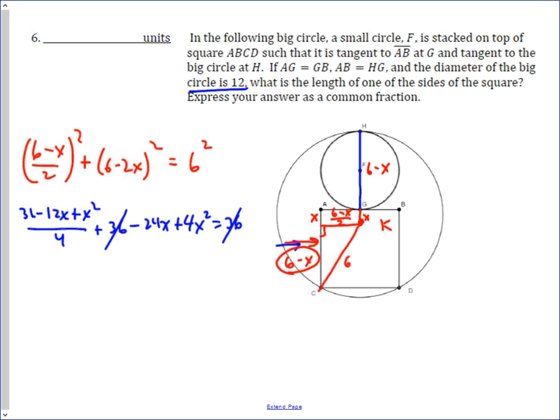It's a good idea to multiply both sides of this equation by 4, so that gives me 36 minus 12x plus x squared, clearing out that 4. And then multiply these two by 4, and so I get negative 96x plus 16x squared equals 0. That gives me 17x squared minus 108x plus 36 equals 0.